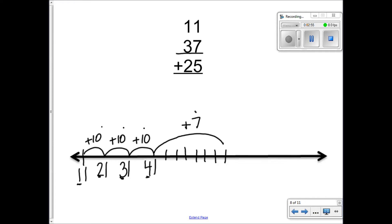One more than forty-one is? Forty-two. Then? Forty-three. Then? Forty-four. Then? Forty-five. Then? Forty-six. Then? Forty-seven. Then? Forty-eight. Forty-eight. Yes.